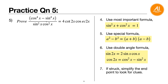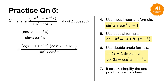Question five: prove (cosine 4x minus sine 4x) over (sine squared x cosine squared x) equals 4 cotangent 2x cosecant 2x. The numerator cosine⁴x minus sine⁴x can be factored using the special formula a squared minus b squared: (cosine squared x plus sine squared x)(cosine squared x minus sine squared x). The first factor equals 1; the second, cosine squared x minus sine squared x, equals cosine 2x from the double angle formula.